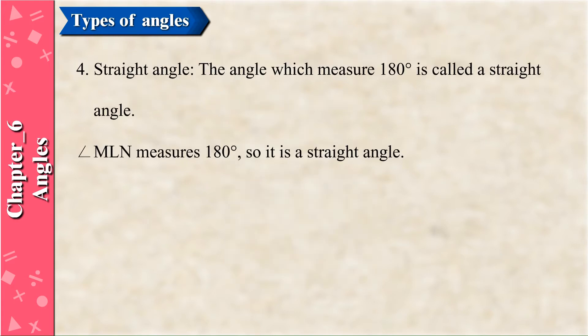Straight Angle: The angle which measures 180 degrees is called a straight angle. Angle MLN measures 180 degrees, so it is a straight angle.